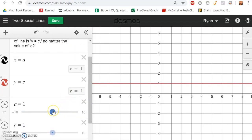So it turns out that no matter what you do to the value of a in the equation x equals a, if you change it, the equation, it always creates what we call a vertical line. Every line of the form x equals some real number gives you a vertical line.